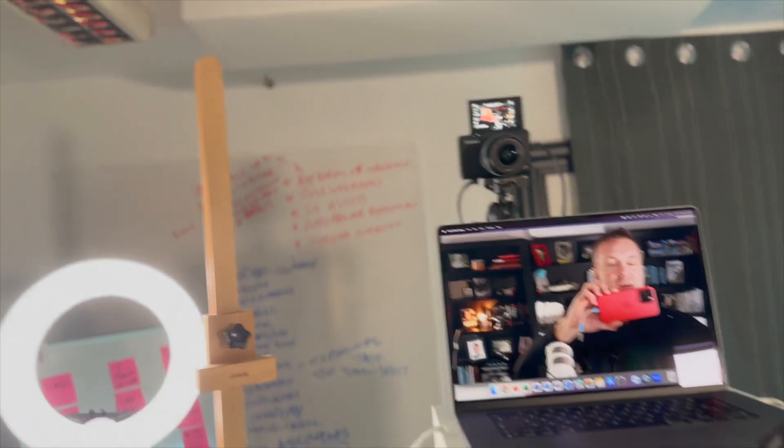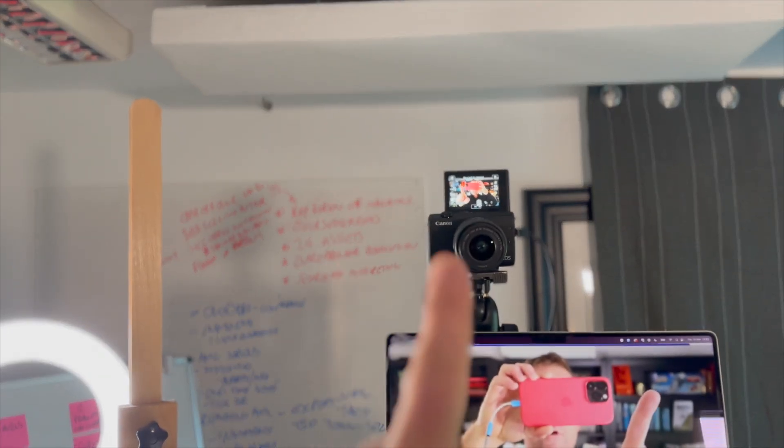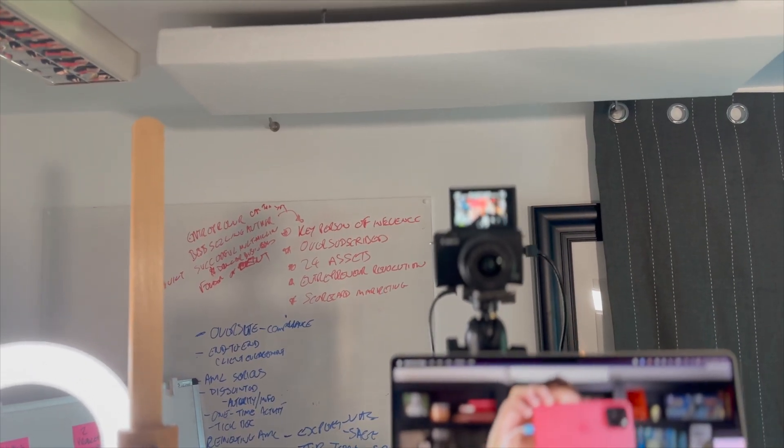I've also got a whiteboard behind the screen. Most of the things I do are unscripted and off the cuff, but occasionally I'll just need a few bullet points or the structure of a presentation. So I'll have some bullet points to the side of the camera — I can stand here and glance at them and people don't even know I'm looking away. For example, I had Daniel Priestley's books listed: Key Person of Influence, Oversubscribed, 24 Assets, Entrepreneur Revolution, Scorecard Marketing. I can just glance over here and it's not too distracting.